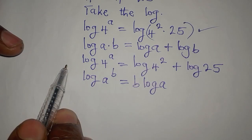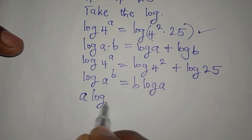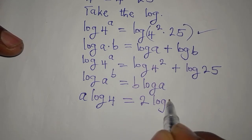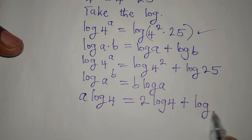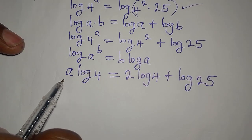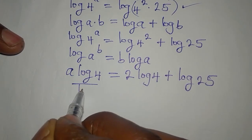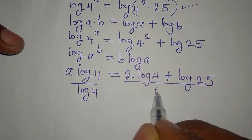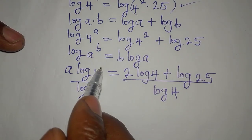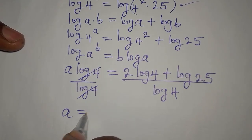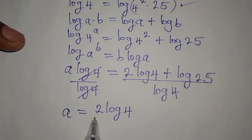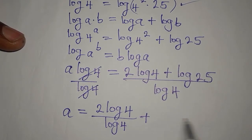Applying that law, the exponent a goes in front, giving us a times log 4. The power 2 also comes down, giving us 2 times log 4, plus log 25. So we have a times log 4 equals 2 log 4 plus log 25. To isolate a, we divide both sides by log 4.